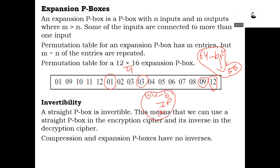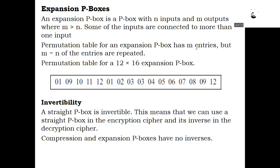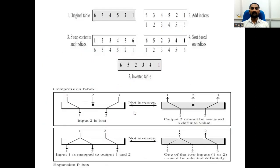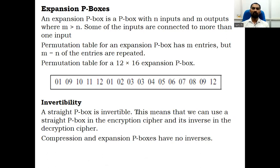Now we need to know whether P-boxes are invertible or not. If you are converting 64 to 64 bits, it is invertible — for 64-bit data we get 64-bit data, so easily invertible. But if you take 32 bits and compress to 24, the receiver does not know which bits are missing. So the invertible property is true for straight P-boxes but not for compression or expansion P-boxes.